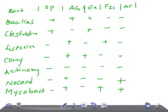Now let's talk about the immunocompromised host. Bacillus — no. Clostridium — no. Listeria — yes, affects immunocompromised patients. Corynebacterium — no. Actinomyces — no. Nocardia — yes. Mycobacterium — yes, of course, because if immunity decreases that's why they get Mycobacterium tuberculosis. That's why TB is very common in HIV patients because of decreased immunity.